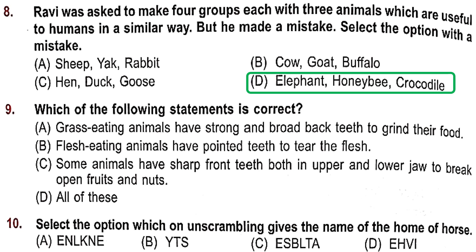Question 9: Which of the following statements is correct? A: grass-eating animals have strong broad back teeth to grind their food — absolutely correct. B: flesh-eating animals have pointed teeth to tear flesh — also correct. C: some animals have sharp front teeth to break open fruits and nuts, like squirrels — also correct. So Option D, all of these, is the right answer.